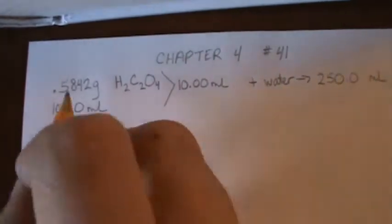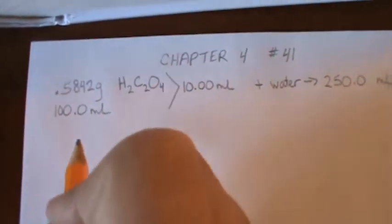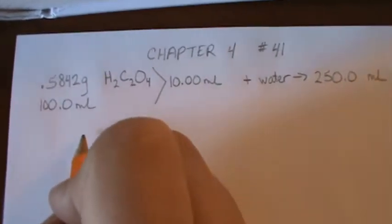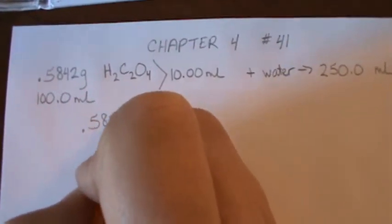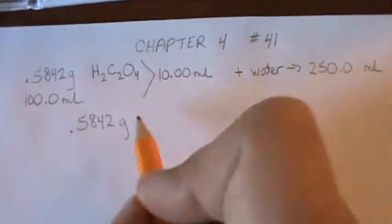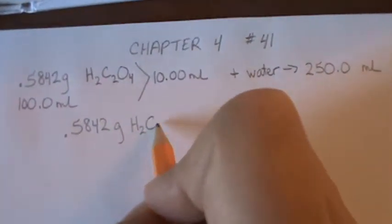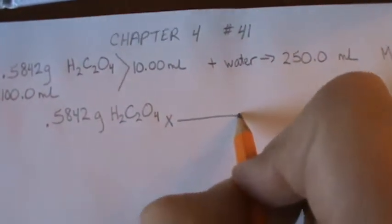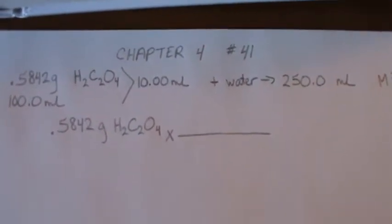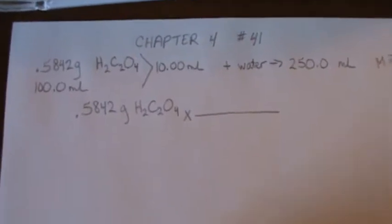So the first thing we need to do is we need to find our molar mass, find a molar mass and find out how many moles of oxalic acid we have. So we would start that with 0.5842 grams of oxalic acid. And then I need a molar mass in order to find out how many moles of oxalic acid we have.